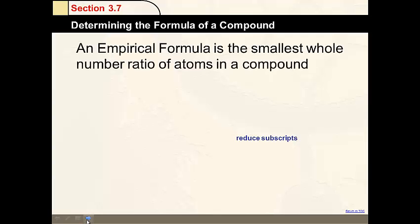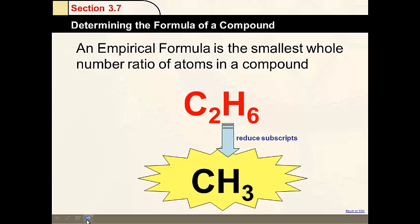Here's an example. C2H6 reduced to CH3. That's the empirical formula in yellow.